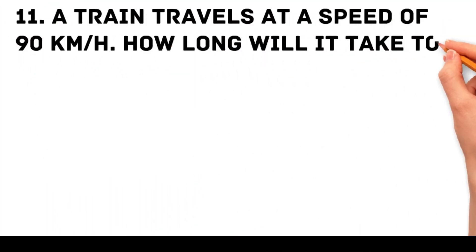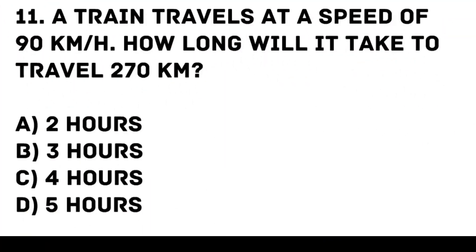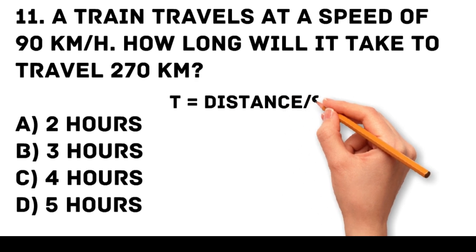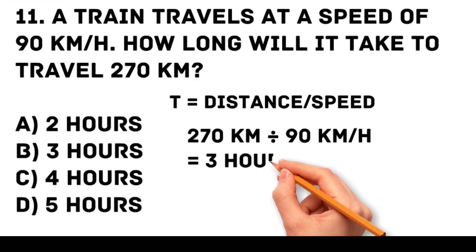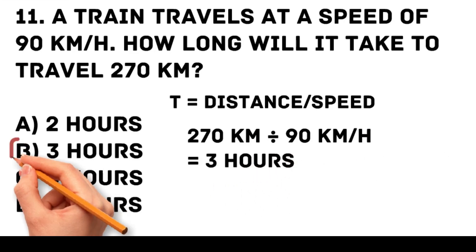Question 11. A train travels at a speed of 90 kilometers per hour. How long will it take to travel 270 kilometers? A. 2 hours. B. 3 hours. C. 4 hours. D. 5 hours. Answer: B. 3 hours. Time is distance divided by speed. Therefore, 270 kilometers divided by 90 kilometers per hour is equal to 3 hours.